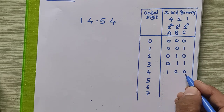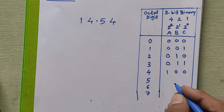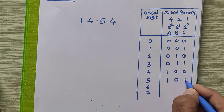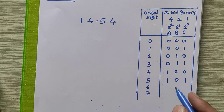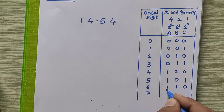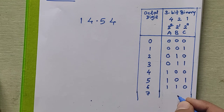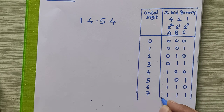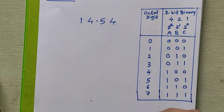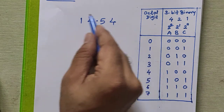For 4, it is 1 0 0 — the '4' bit is on and the others are 0. For 5, it is 4 plus 1, so the first and last bits are 1: 1 0 1. For 6, it is 4 plus 2, so bits are 1 1 0. For 7, it is 4 plus 2 plus 1 — all bits are on: 1 1 1. This way we get the three-bit binary equivalents for all octal digits.